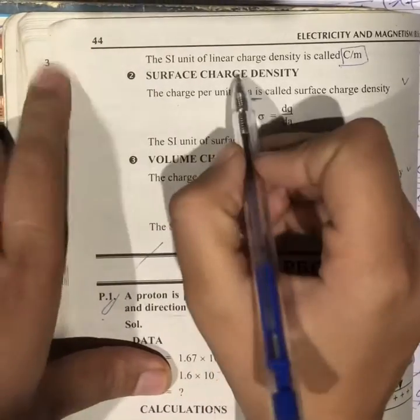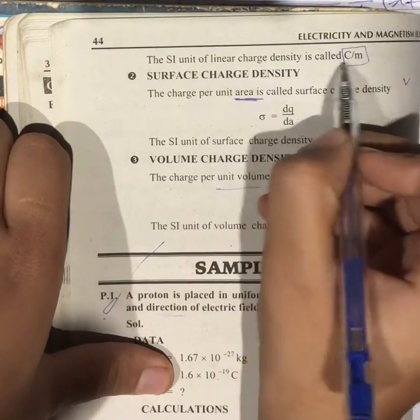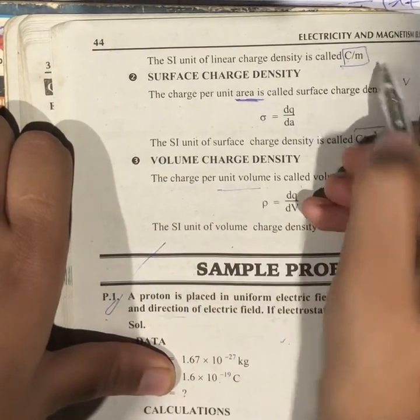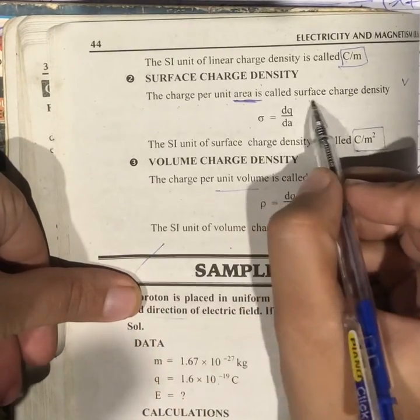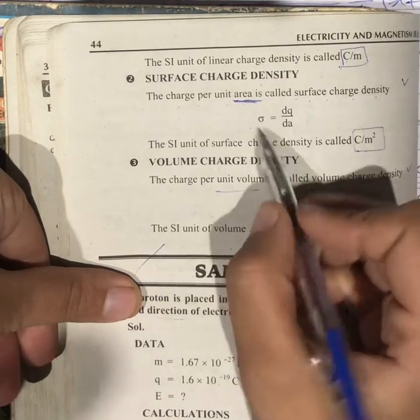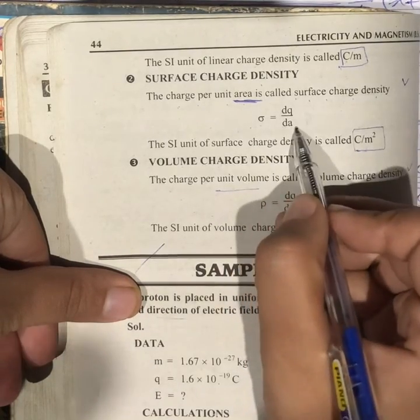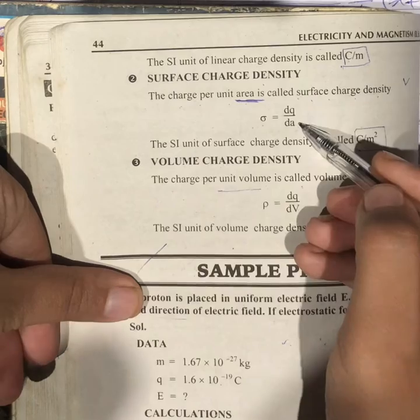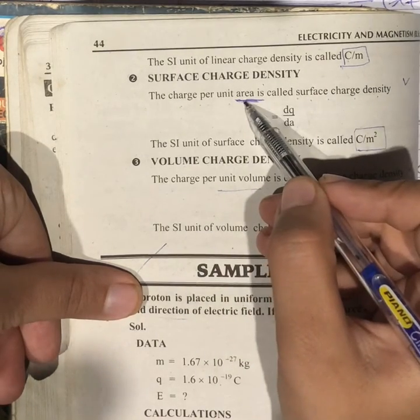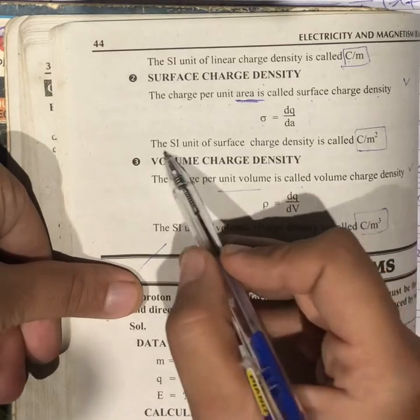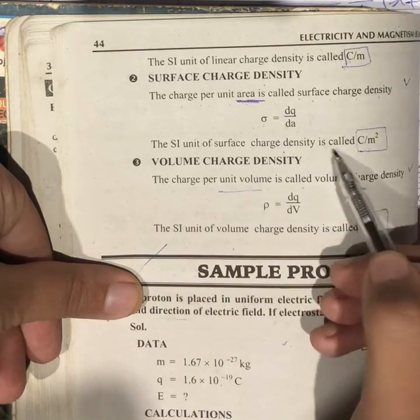The SI unit of linear charge density is coulomb per meter. Surface charge density - the charge per unit area is called surface charge density. Sigma equals dq over da, that is charge per unit area. The SI unit of surface charge density is coulomb per meter square.